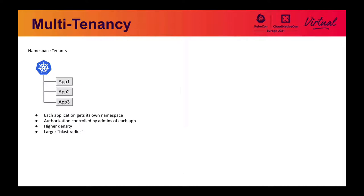If somebody comes in and there's a bug in their application that leads to someone owning the node, you now expose multiple applications. Like I said, this isn't a 'pick one out of these three' — you're probably going to end up using all three for different scenarios. And that's where it gets back to the business rules and the business problem that authorization needs to solve being the hard part.